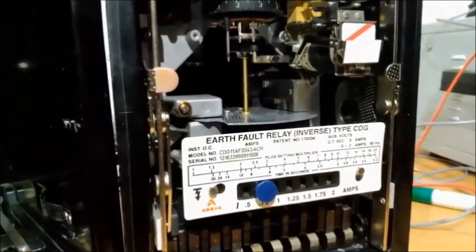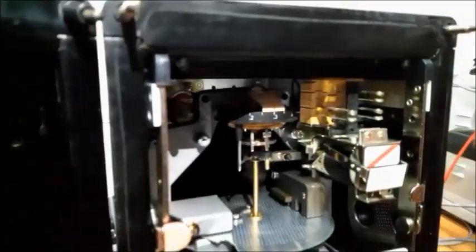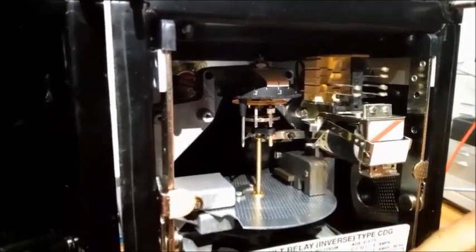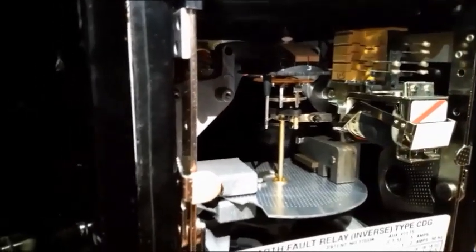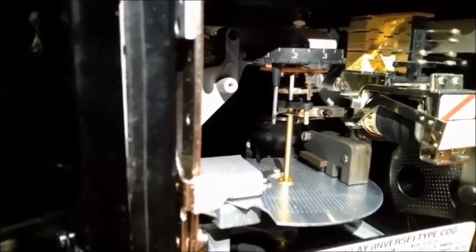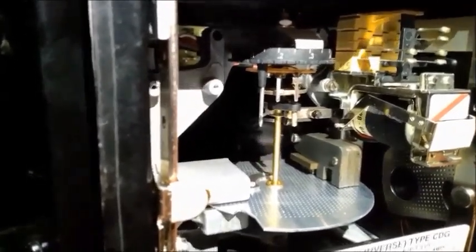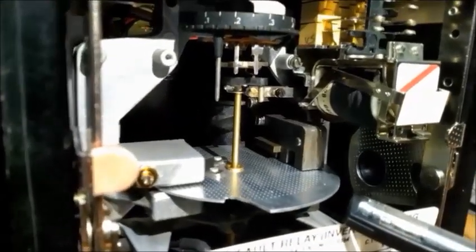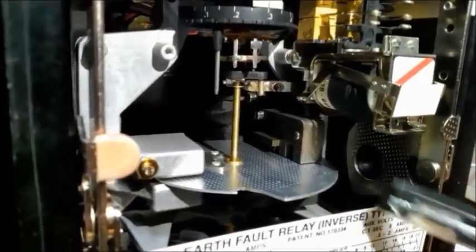That is 0.75. So now you can see closely. Pickup current is when the disk is start rotating. Just try to start rotating. That is our pickup current. So we just inject our 0.75 set current. So we are now injecting 0.75 amps slowly. Increase. 0.75. Now you see the disk. You see here, the disk is slowly rotating. That means we got our pickup current. So now stop.